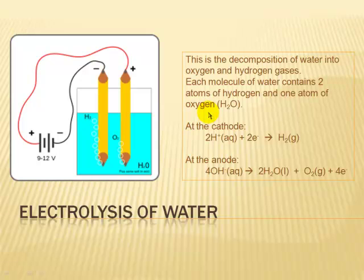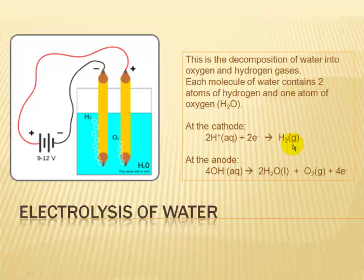What's actually happening in this experiment: at the cathode — that's the negative electrode — two hydrogen ions are attracted towards it. There they gain two electrons to produce hydrogen gas, H2.